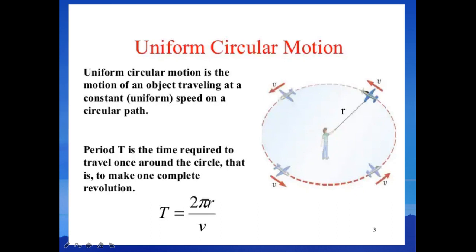Uniform circular motion is the motion of an object traveling at uniform speed on a circular path. The time period T is the time required to travel once around the circle — to complete one revolution. T is equal to 2πR divided by the speed V, and if you want to calculate the speed, V is equal to 2πR divided by T, where R is the radius of the circle.